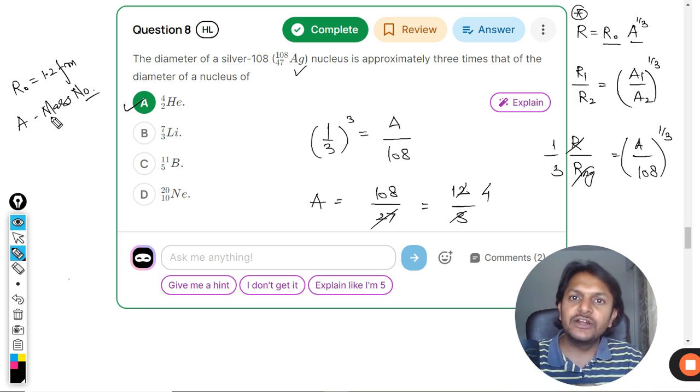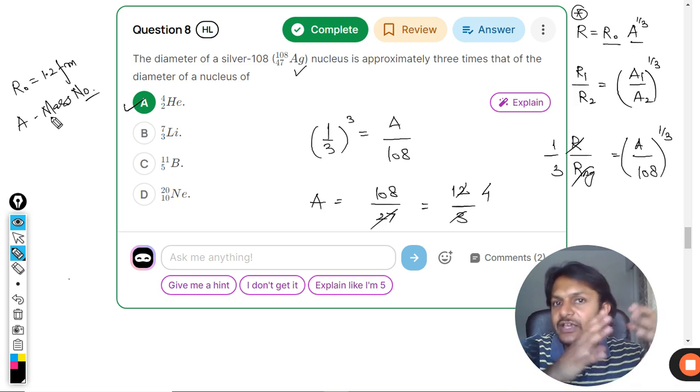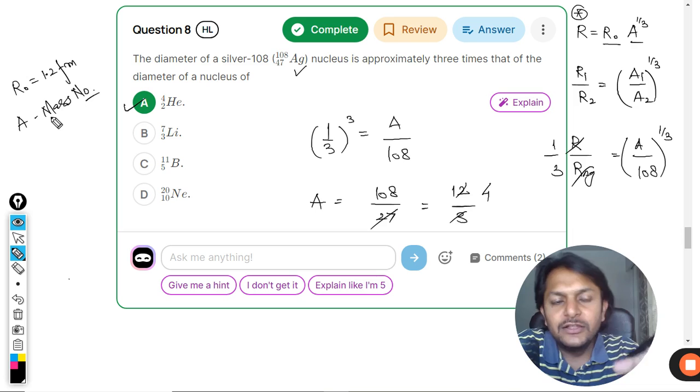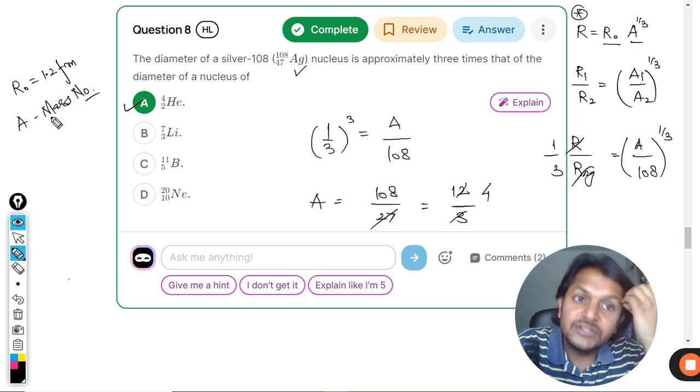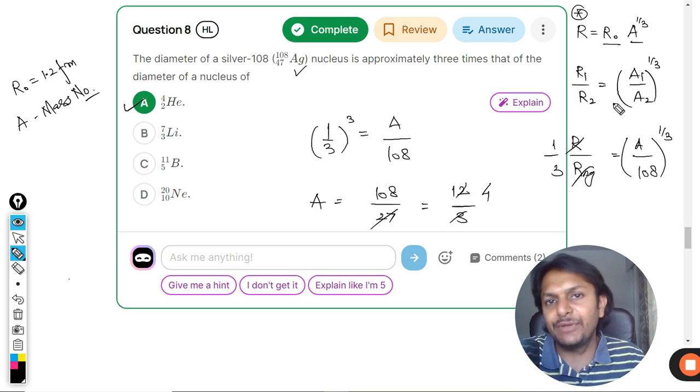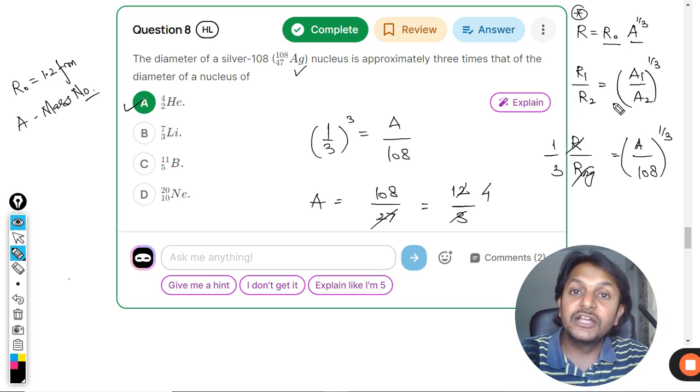So we plug this value there and you can literally find the radius of each and every nucleus. So this is the expression, and this expression is given in your data. From this, we create this simple expression. When we compare the radius of the two nuclei, the diameter of the two nuclei, like that. So this is how we do this.